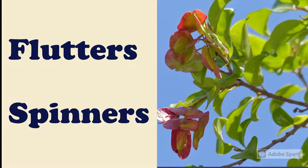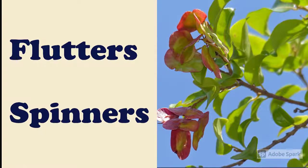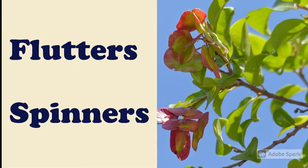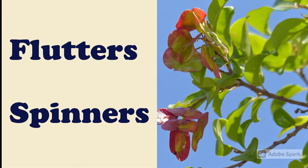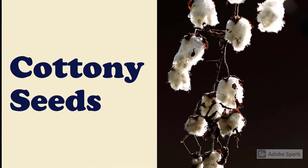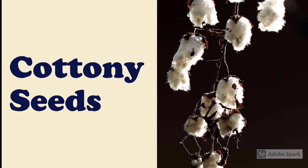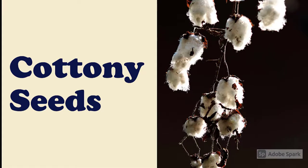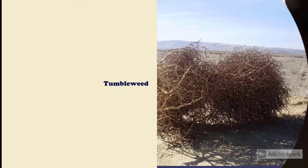Another type of wind-dispersed seed are called flutters or spinners. These ones will actually catch the wind and flutter or spin away from the parent plant. There are many cottony-type seeds that are dispersed in the wind. For example, here is the cotton plant. Notice how the stalk is tall and long so it can catch the wind, and notice that each cotton puff is full of many, many little seeds, so when that puff gets blown off into the wind, it's carrying many seeds with it.